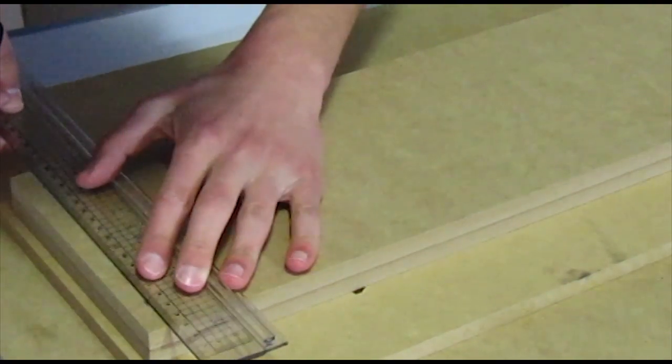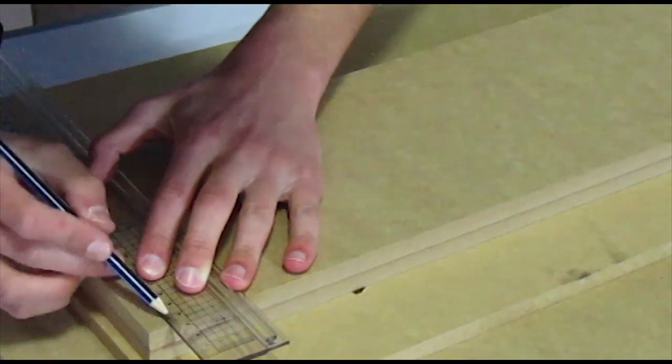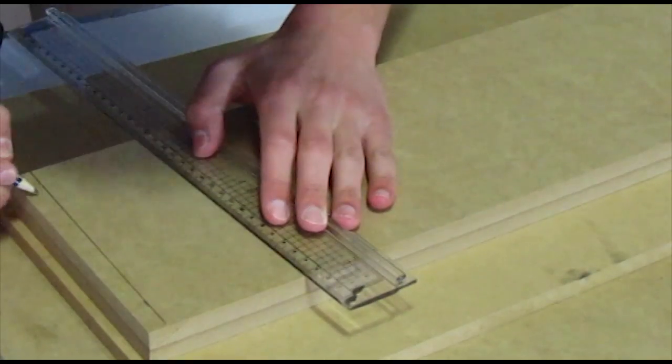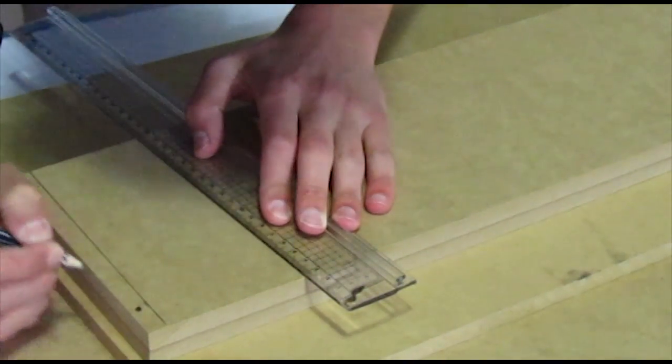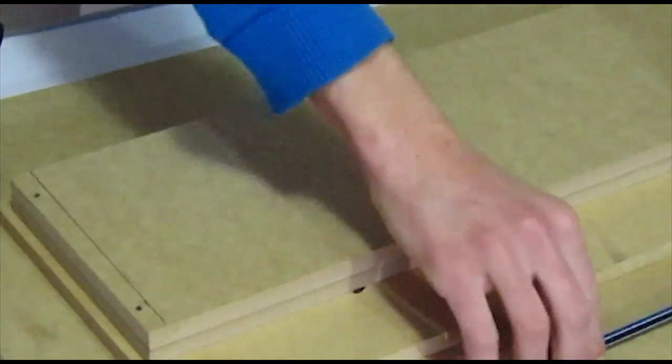So what I want to do now is drill the hole roughly five centimeters from each side. Then we're going to be countersinking it, and this will all be shown right now.